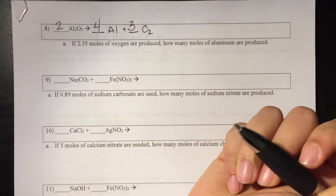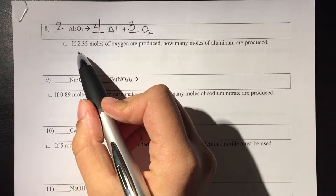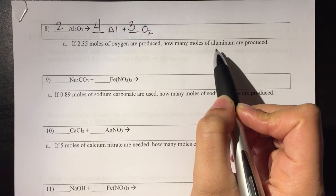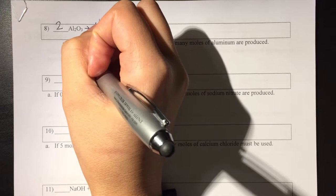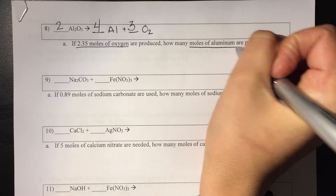Now that we have a balanced equation, we can begin our problem. If we look at our problem, it says if 2.35 moles of oxygen are produced, how many moles of aluminum are produced? As we've done before, we need to underline what are we starting with, what's our given, and then what are we trying to get to?